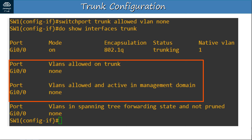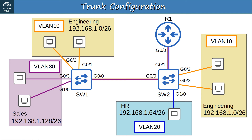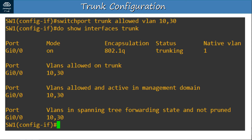Now let's configure the actual settings for this network. SWITCH1 has hosts in VLAN10 and VLAN30, so there's no need to allow VLAN20 on the trunk between SWITCH1 and SWITCH2. We set the allowed VLANs to 10 and 30. This is done for security purposes — to ensure only necessary VLAN traffic uses that connection — and for network performance, as broadcasts in other VLANs won't be sent over the trunk.